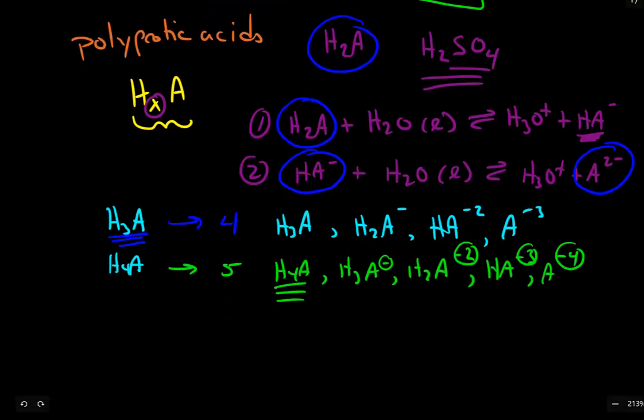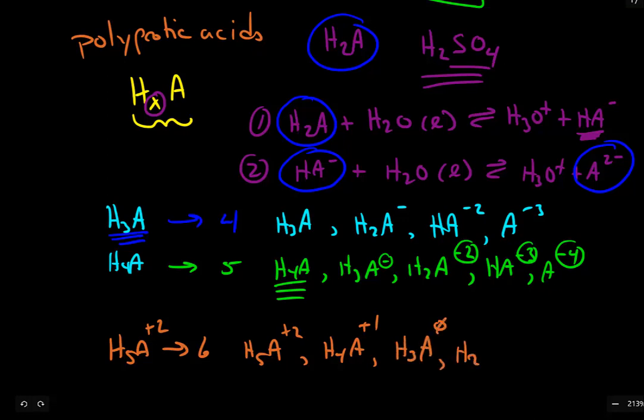But, for example, if we start with a pentaprotic acid, and let's say the pentaprotic acid has a charge of plus two, we would predict that we have six chemical species. We would have H5A with a plus two charge, we would have H4A+, we lose one positive charge so we now have a plus one, H3A which is neutral, H2A-, HA2-, and finally the fully deprotonated form would have a negative three charge.